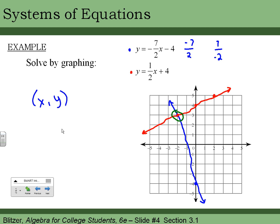That's at negative two comma three. So that's the solution to this set of equations. I just had to graph each one, look at where they intersect, and then find that point for my answer.